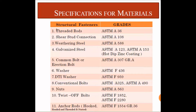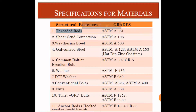For example, if you use threaded rods, it is going to have a grade of ASTM A36. For shear stud connections, we use ASTM A108. For weathering steel, we have ASTM A588. For galvanized steel — hot dip zinc coating members — we use ASTM A123.